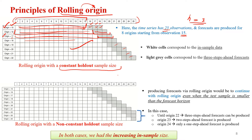The second approach to calculate rolling origin forecast error uses a non-constant holdout sample size. Here we use different in-sample sizes, and the forecast horizon varies: over here the forecast horizon is 3, then 2, then 1. So we use one-step-ahead, two-step-ahead, and three-step-ahead forecast errors to generate the error measures.